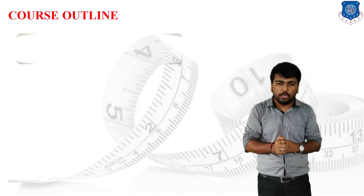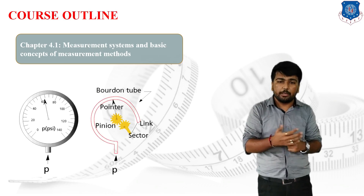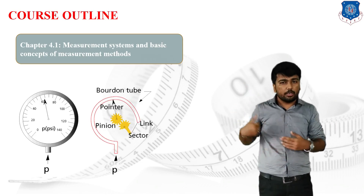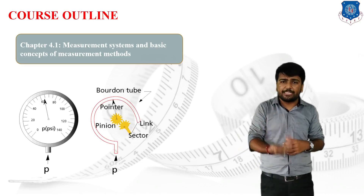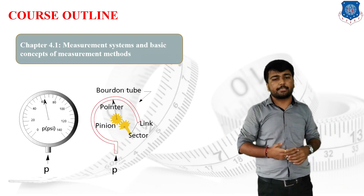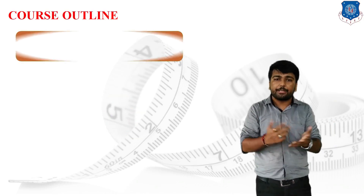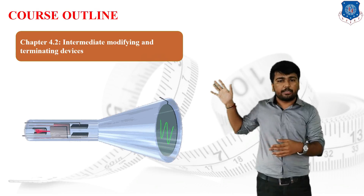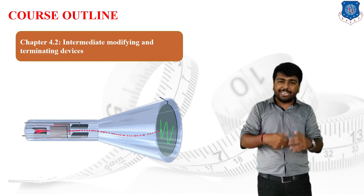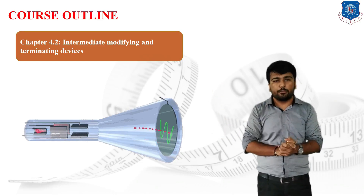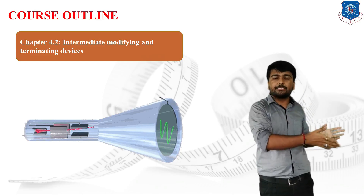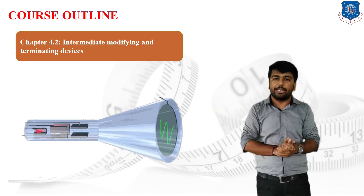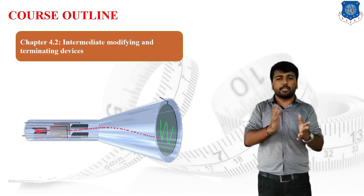Unit 4 is Measurement Systems and Basic Concept of Measurement Methods. We will discuss the generalized measurement system followed universally, basic measuring methods, and instruments developed for different measuring techniques. The second portion covers intermediate modifying and terminating devices, which develop advanced techniques that correlate the mechanical system to the electrical system — providing circuits to convert mechanical output into electrical output for use with digital displays.